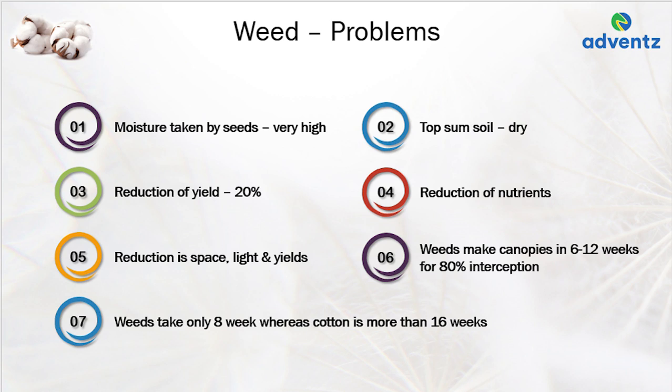Weeds deplete an enormous amount of plant nutrients from the soil. All weeds compete for space and light and reduce crop yields. When moisture and nutrients are adequate, the competition is mostly for light. Interception of light by canopies of cotton occurs more slowly than canopies of weeds, requiring 6–12 weeks for 80% light interception by cotton. Weeds take 8 weeks to reach maximum cover while cotton takes 16 weeks to reach 90% cover.